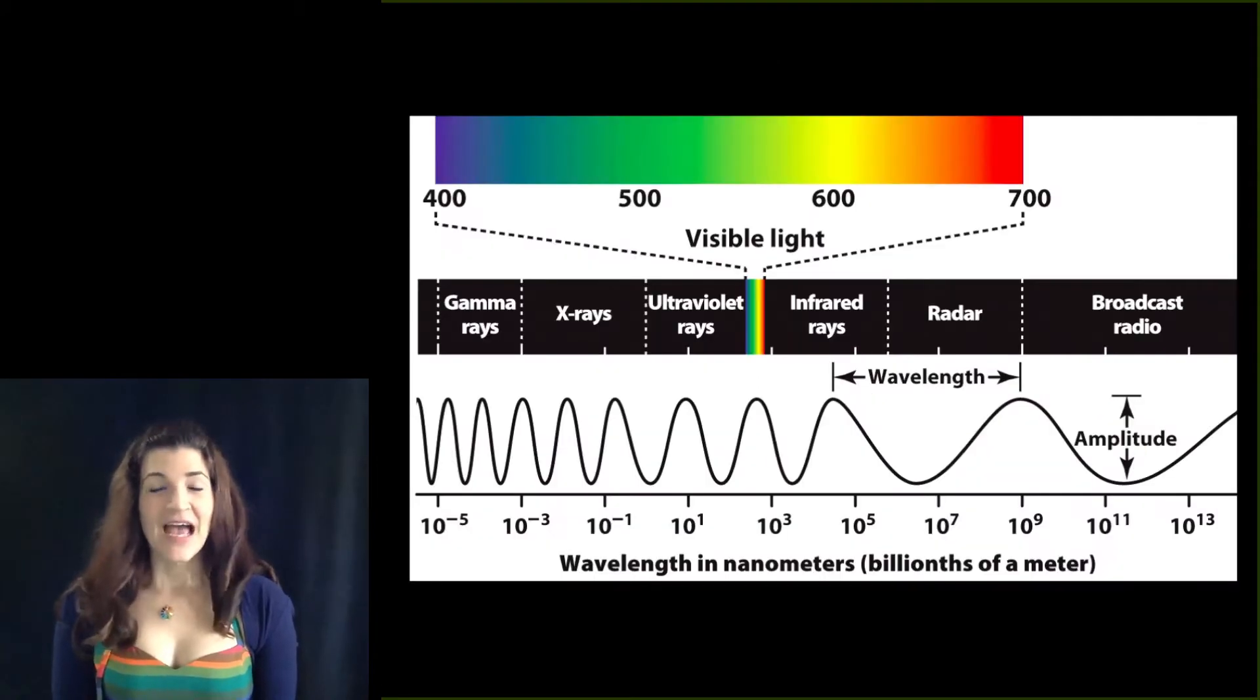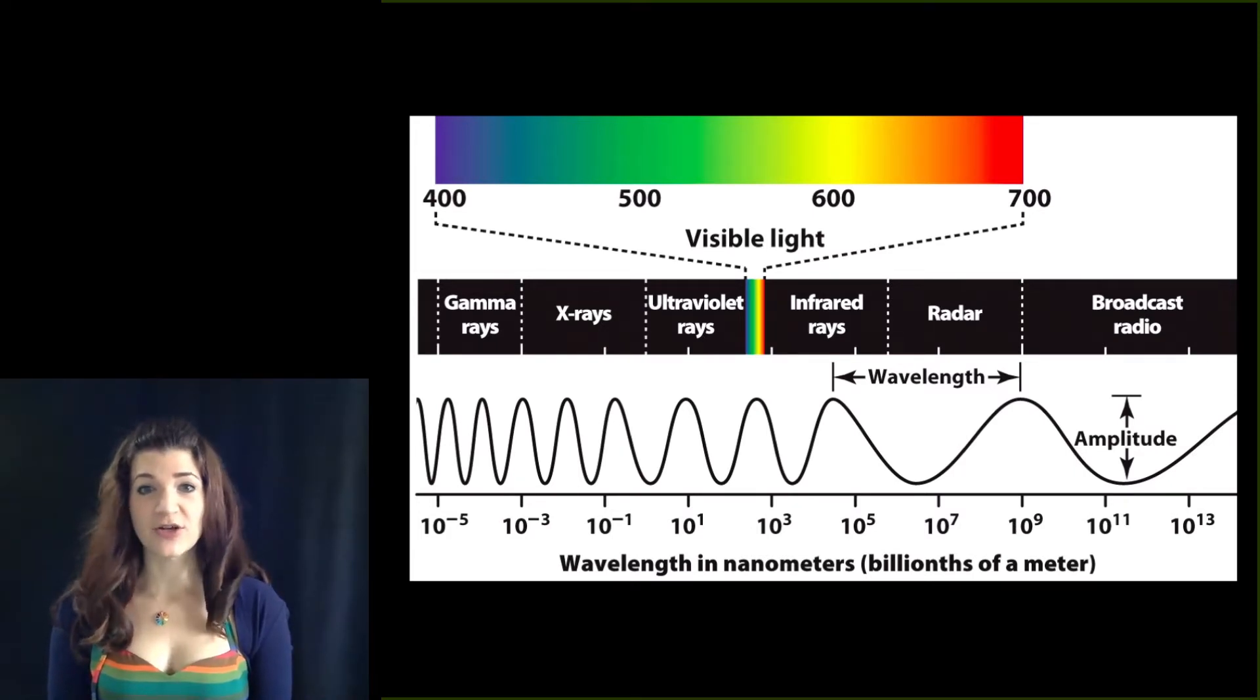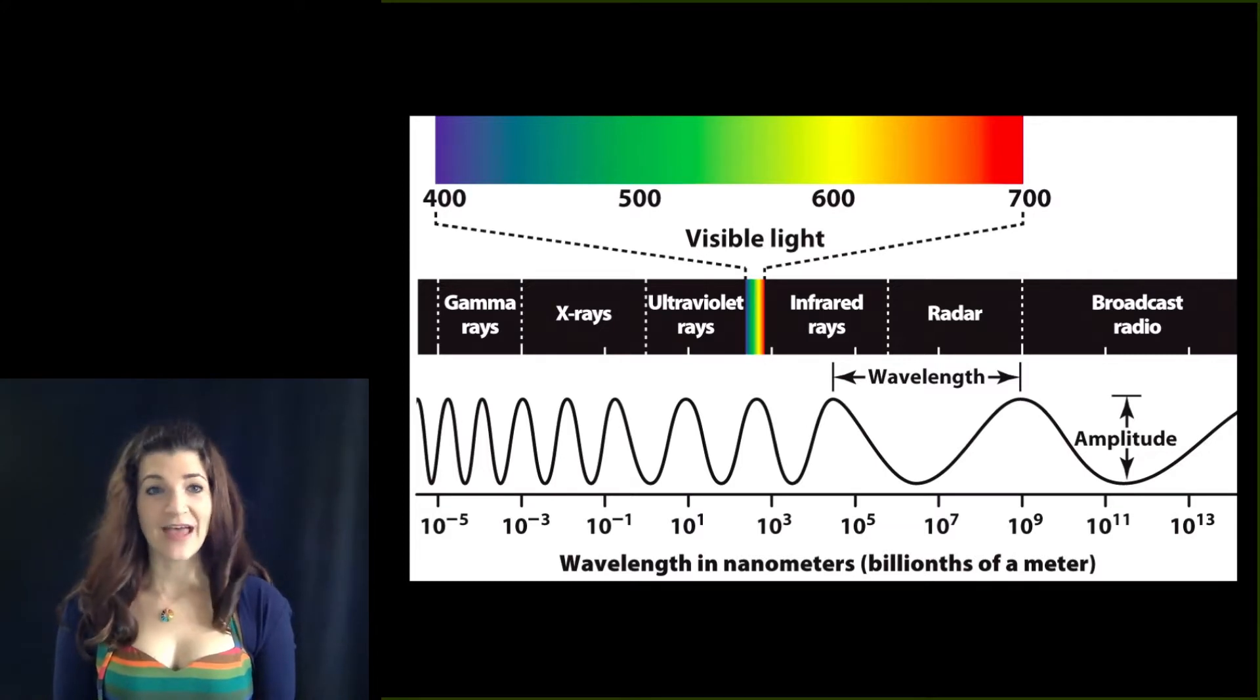Quick before we get there. As you read, the portion of the electromagnetic spectrum between about 400 nanometers and 750 nanometers is what humans can see. That is the Goldilocks zone of the visible spectrum.